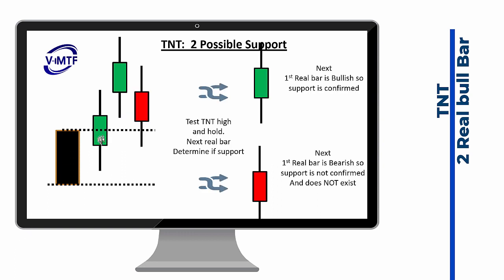In this second example, price closed above the TNT, confirming the bottom support, but it did not test the high of the TNT at all. So the TNT high cannot be counted as support or resistance until price came back and tested it. Price came back and tested and held — now we wait for the next real bar. If it's bearish, this will not be a support resistance at all. If the next real bar is bullish, then this would be confirmed as support too. So you can have situations where both the low and the high of a TNT are support resistances, or just one of them — you have to go through the full validation process.